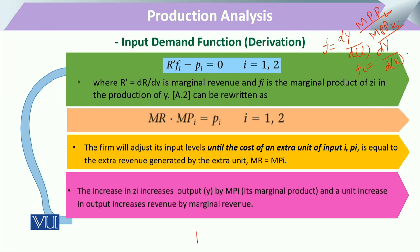When we calculate the marginal rate of technical substitution (MRTS), we equate these two marginal physical productivities to each other. In this equation, fi represents the marginal product obtained through the utilization of that particular factor of production.